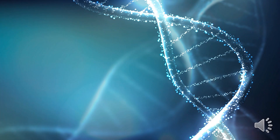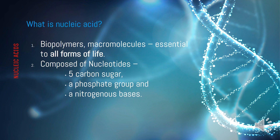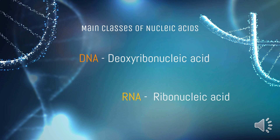In this video, we are here to discuss Nucleic Acids. Nucleic Acids are large molecules made up of smaller molecules called nucleotides. Nucleotide monomers always contain a 5-carbon sugar referred to as pentose, a phosphate group, and a nitrogenous base. The main classes of nucleic acids are DNA and RNA.